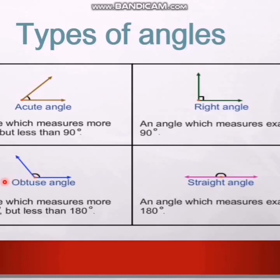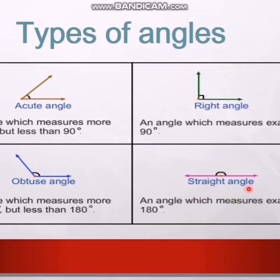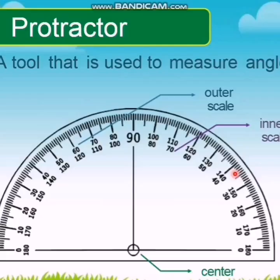The obtuse angle is the angle that is greater than 90 degrees but less than 180 degrees. The straight angle is the angle that forms a straight line, which is exactly 180 degrees.